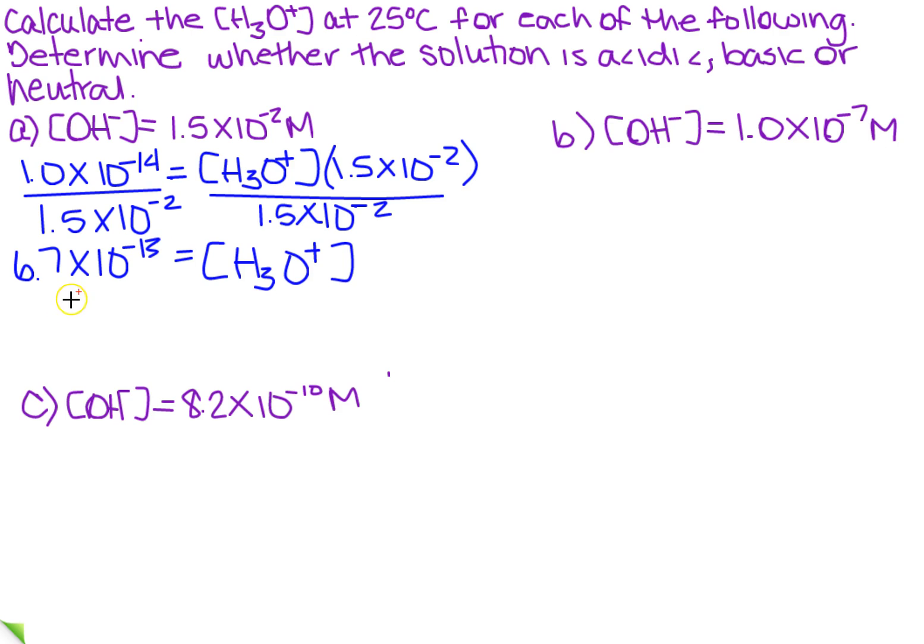Now, I need to compare the OH concentration with the H3O concentration. So the OH was a minus 2. This is a minus 13, so it is greater than the hydronium, so this is a basic solution.